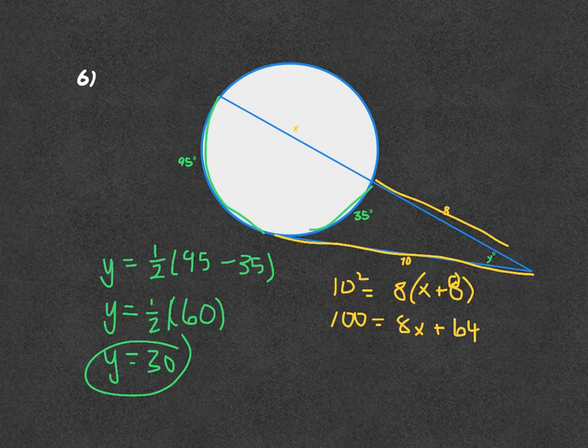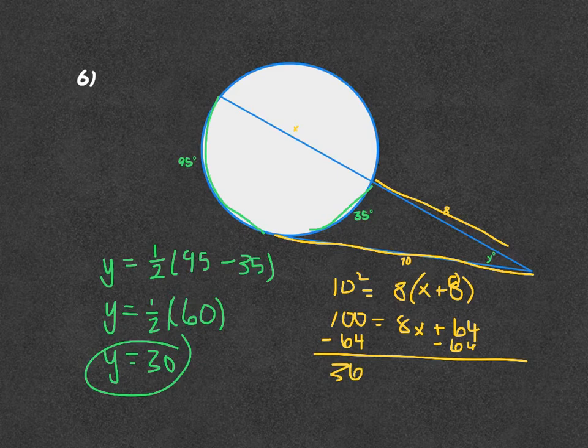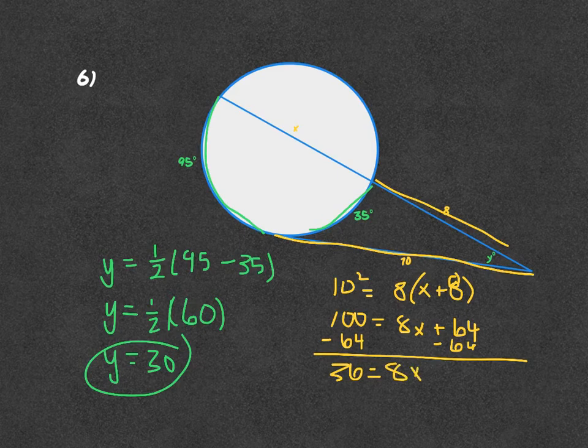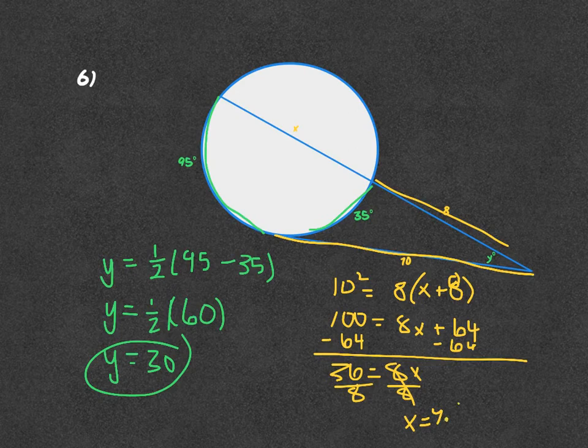Subtract the 64 over, and you get 36 equals 8X. Divide by the 8, and X equals 4.5.